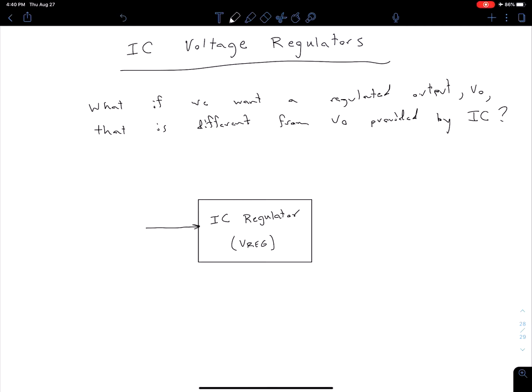On pin 1 we have our unregulated Vraw input. This Vraw has to be high enough to power our circuit. Pin 2 is our ground pin. An important thing to note is that some current flows into pin 2 to power the device. We'll mention why that's important later.